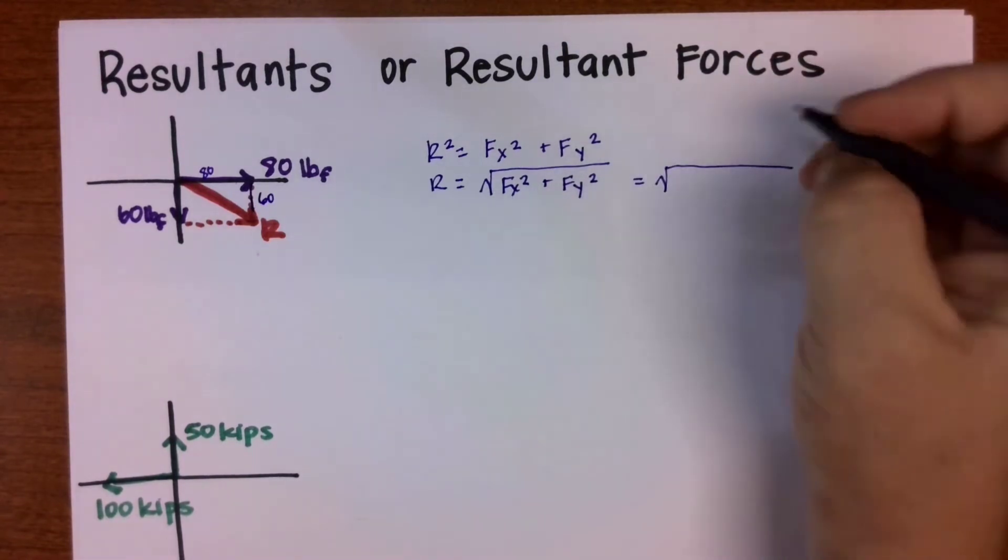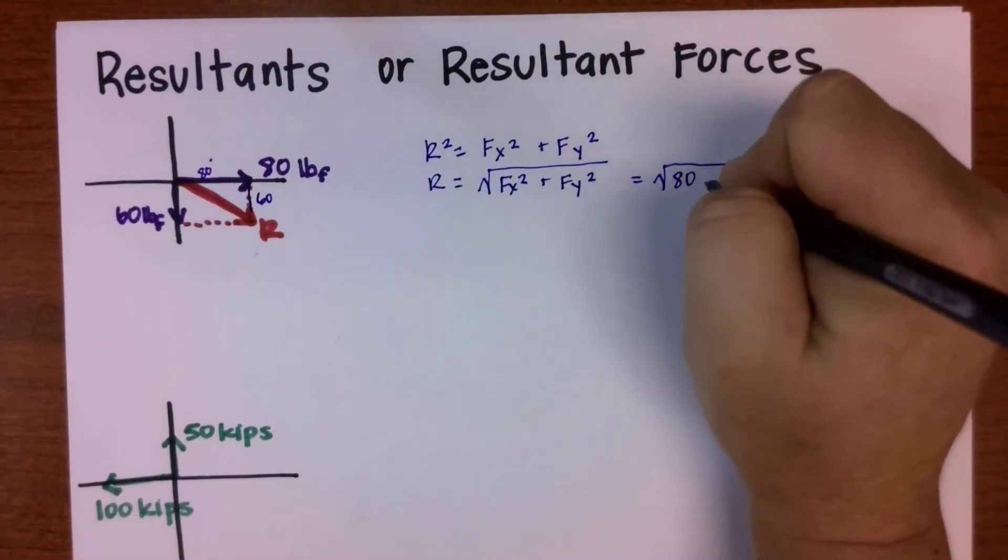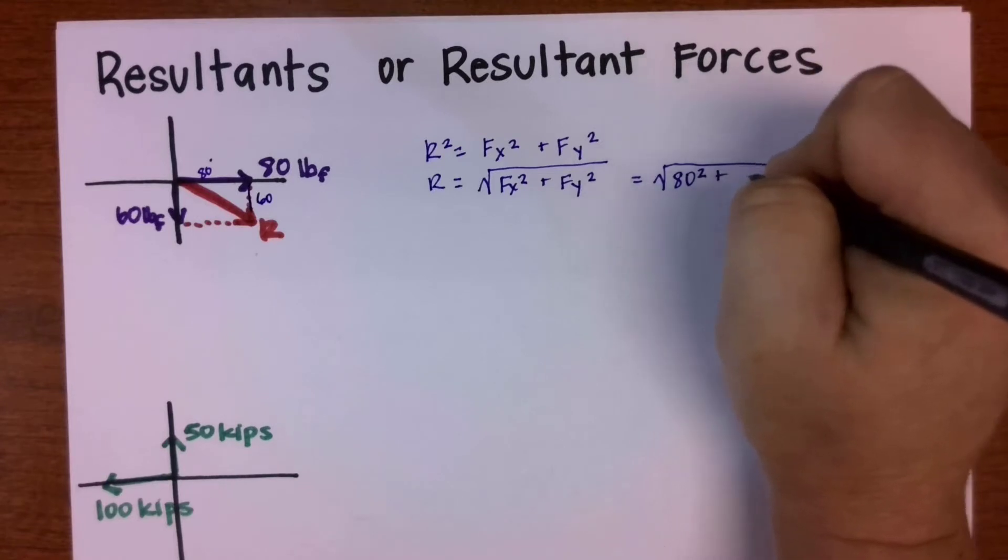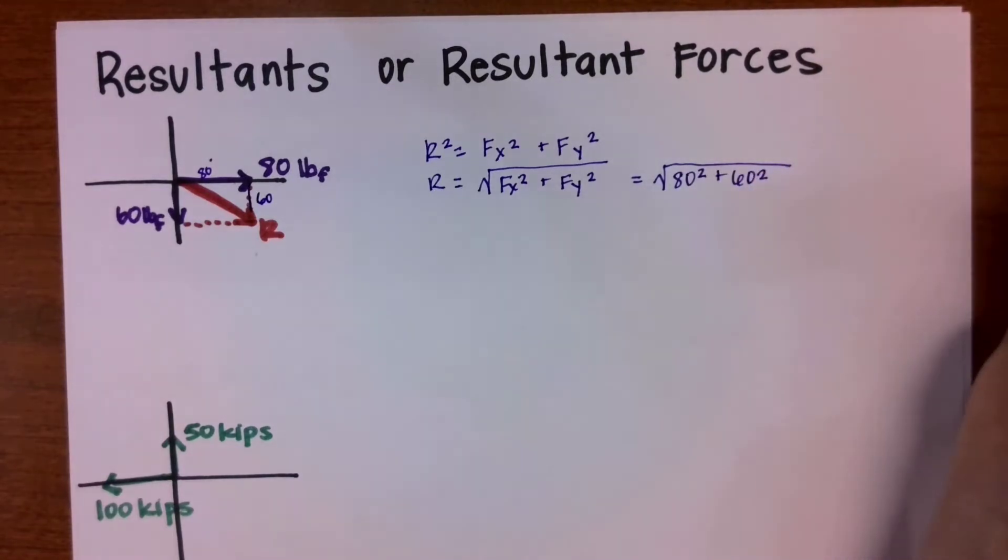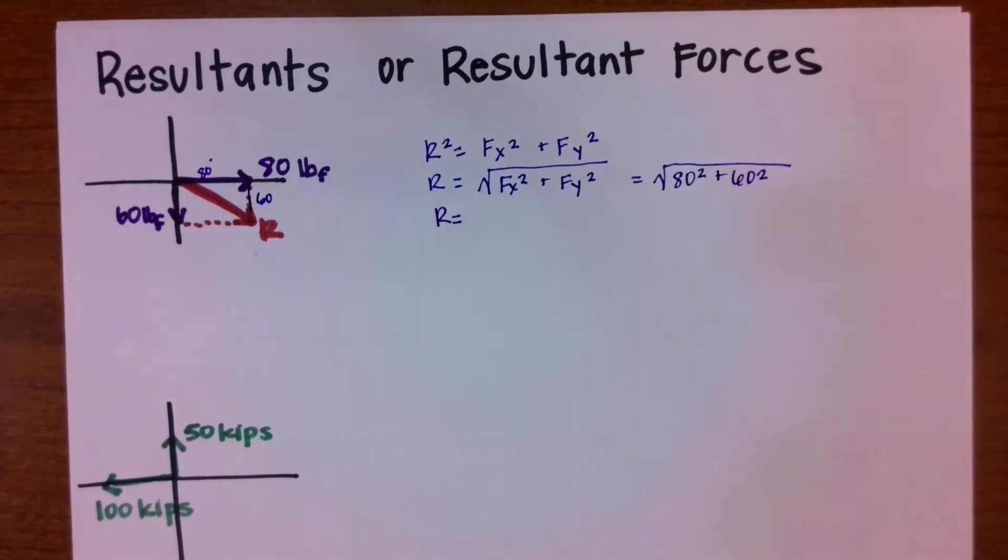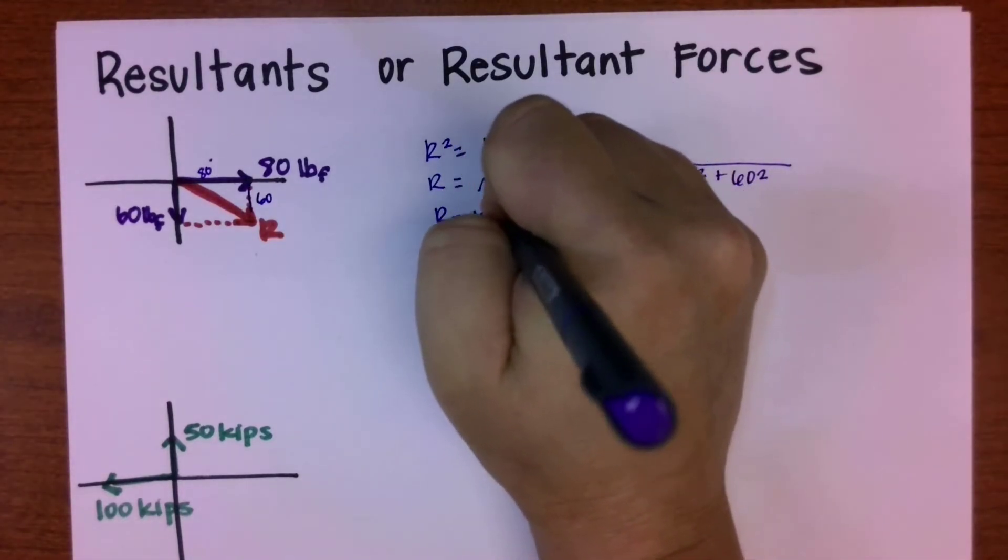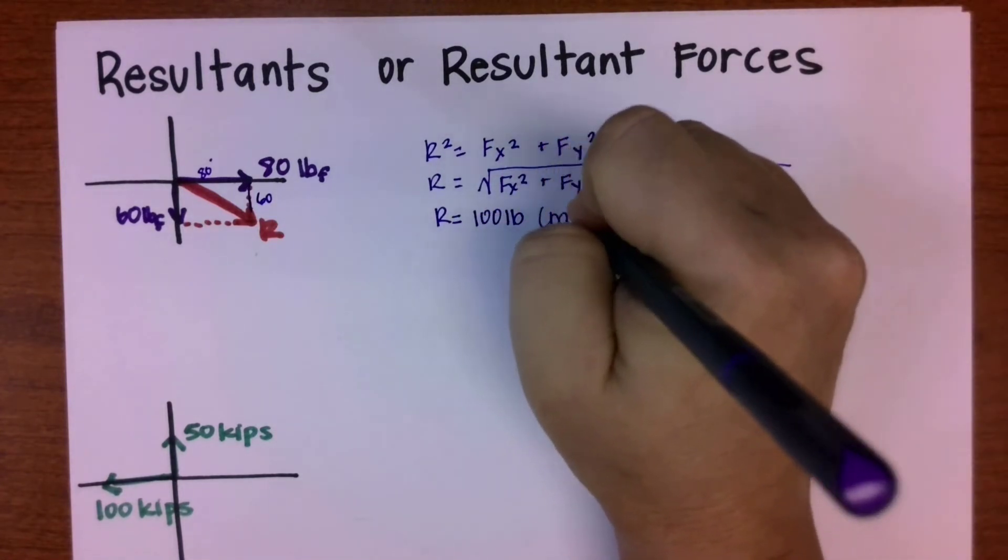So when I plug that into my calculator, I get r equals, oh look at that, 100 pounds. Okay, so that's just the magnitude of my resultant force.